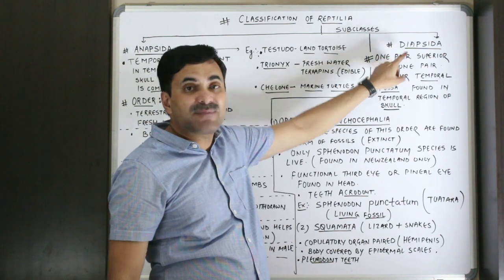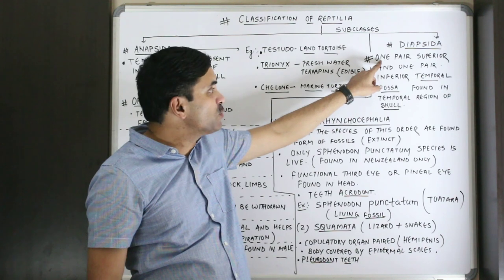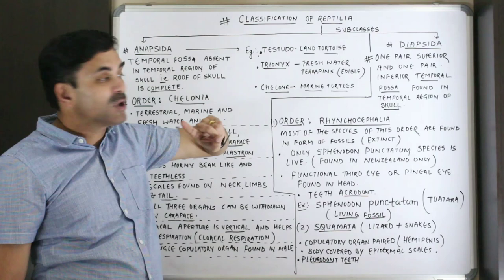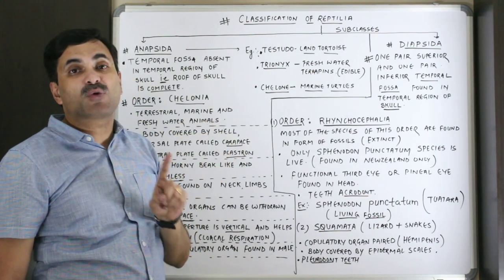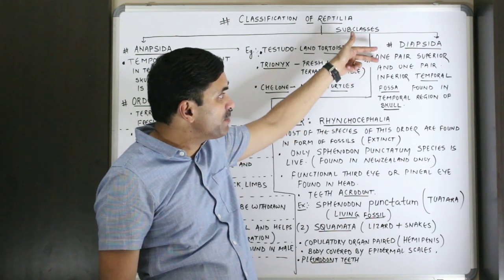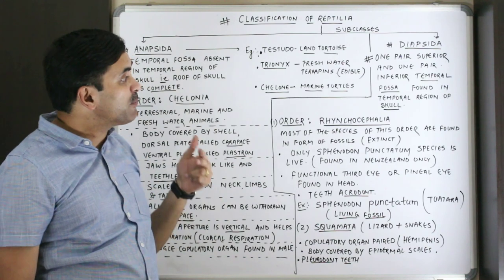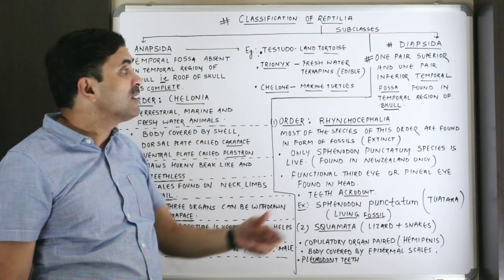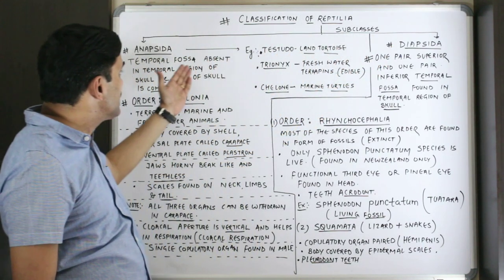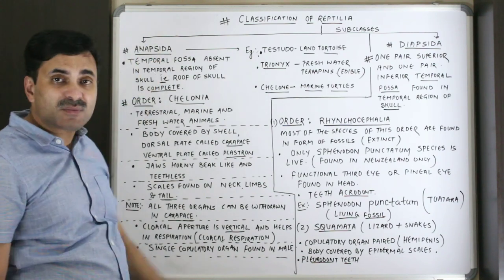The other subclass is known as Diapsida, meaning two. In Diapsida, there is one pair of superior temporal fossa and one pair of inferior temporal fossa found in the temporal region of the skull — two pairs in total. That is why the subclass is named Diapsida, while in Anapsida the temporal fossa is absent.